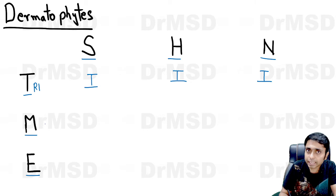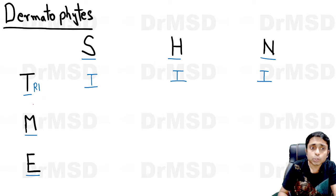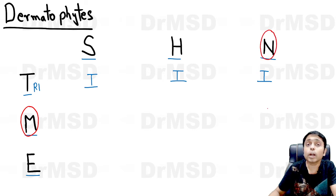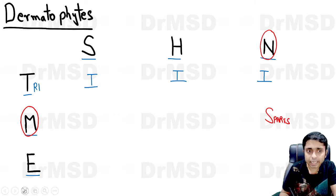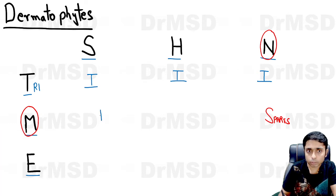If you look at Microsporum, it starts with the letter M. Because M is very close to N alphabetically, Microsporum will not infect nails — there will be sparing of the nails by Microsporum. So skin and hair can get infected by Microsporum.